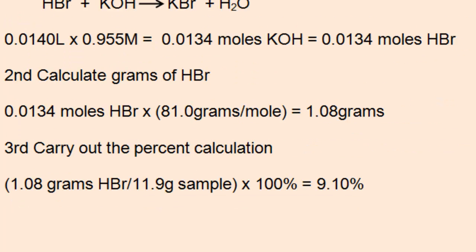Then using the moles of HBr, calculate the grams of HBr that were in the solution using the molar mass of HBr, multiplying 0.0134 moles by 81 grams per mole to get 1.08 grams.